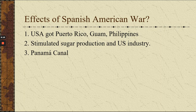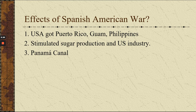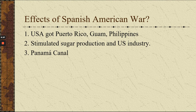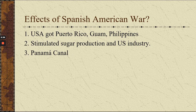The effects of the Spanish-American War: we got Puerto Rico, Guam, and the Philippines. It stimulated sugar production and U.S. industry. Also, the United States decided to build the Panama Canal, which would be finished by about 1914–1915.